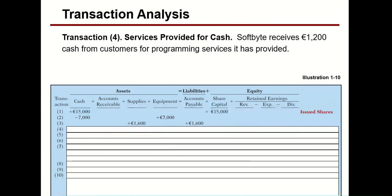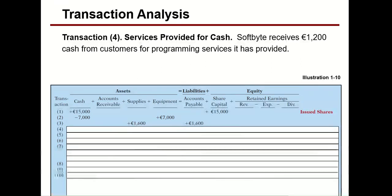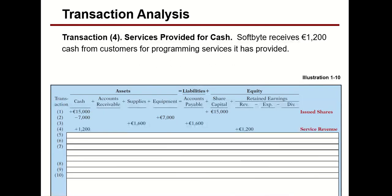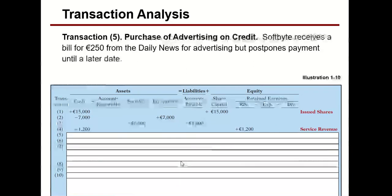Transaction four: Softbite receives €1,200 cash from customers for programming services provided. This is the first retained earnings transaction — the first revenue entry. Cash increases by €1,200 under the cash column, and €1,200 is added under revenue with a positive sign, because revenue always carries a positive sign while expenses and dividends carry negative signs.